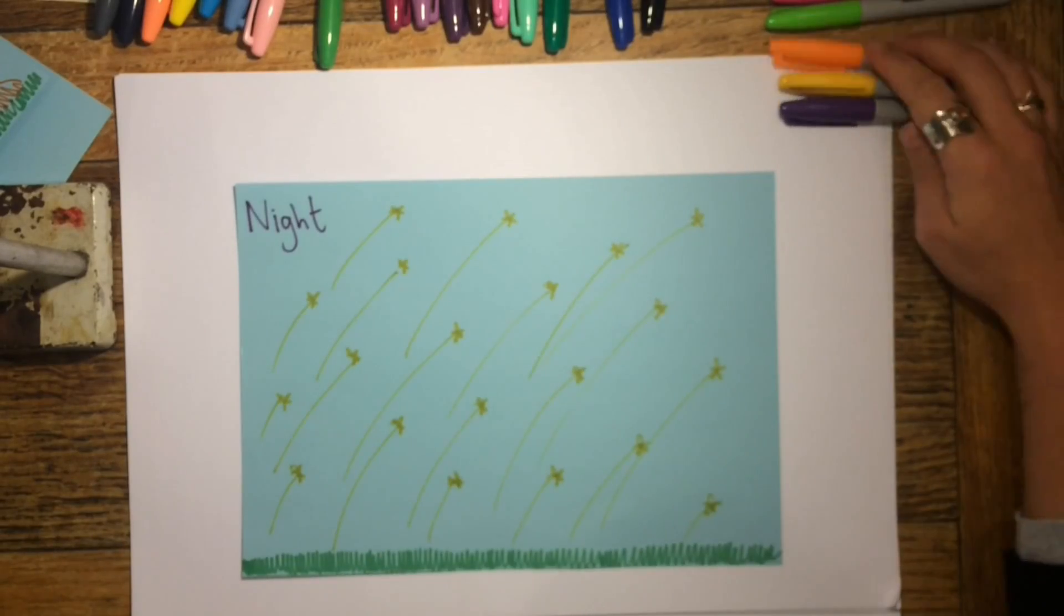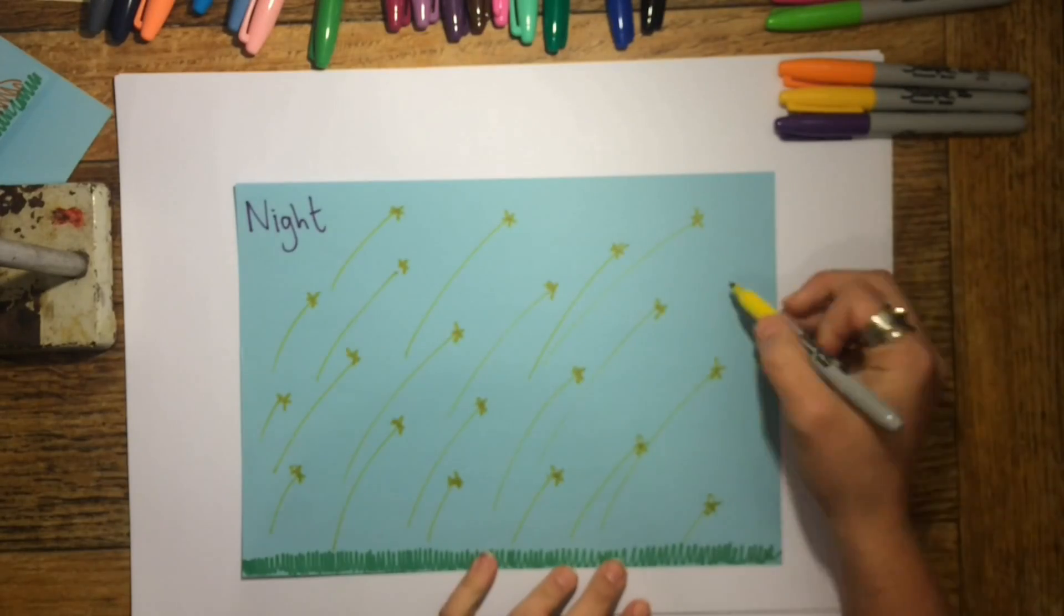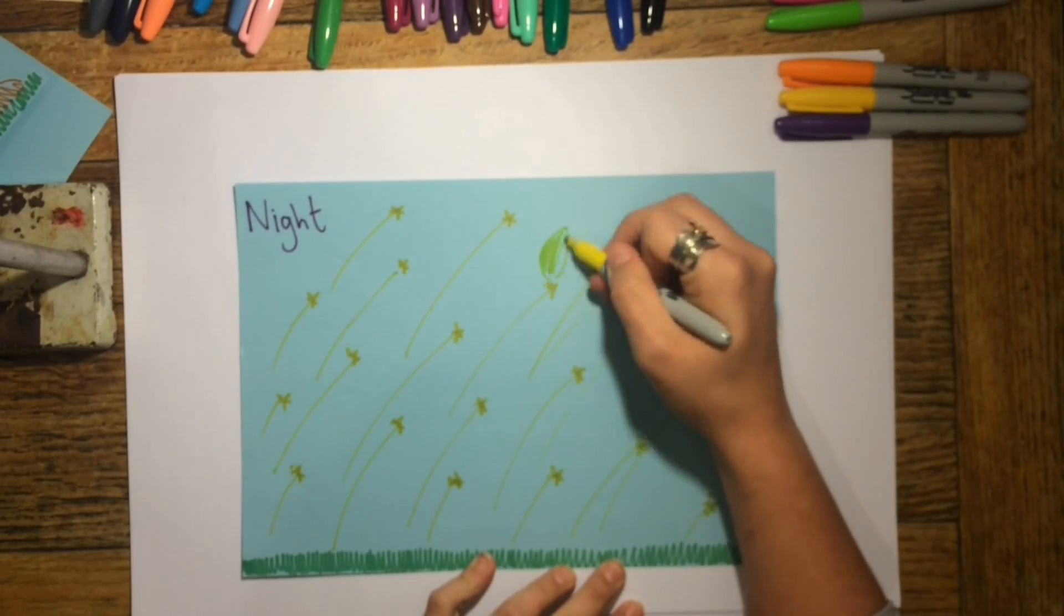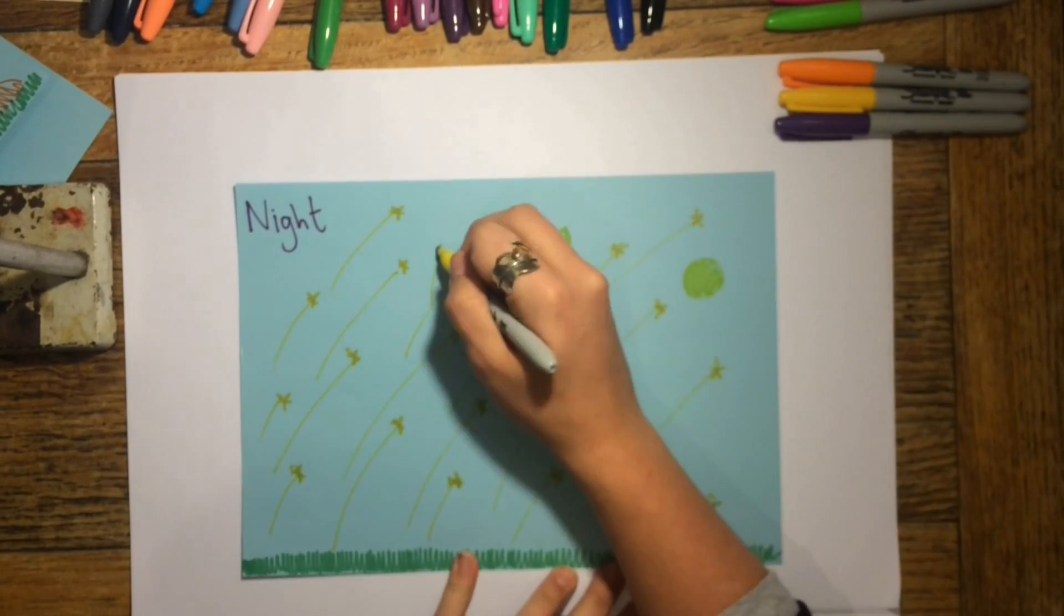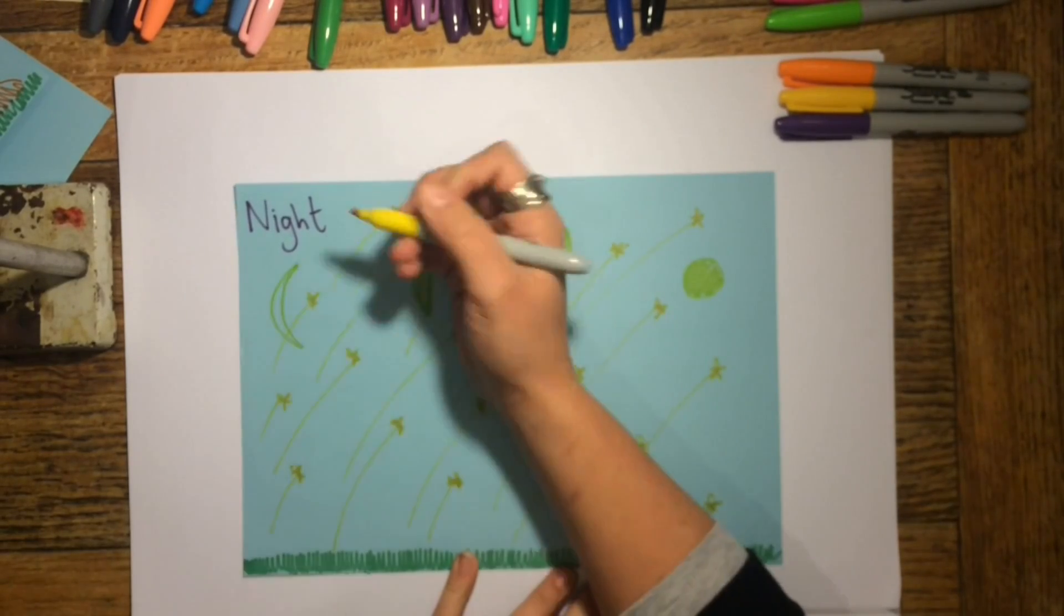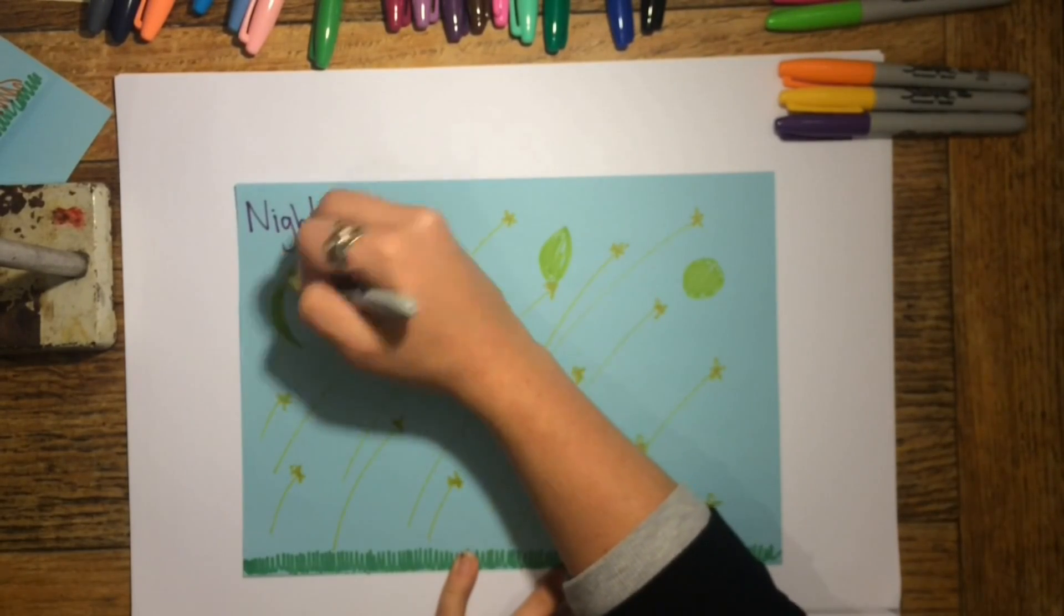One of the other objects that hopefully you're all familiar with in the night sky is the moon, and this also appears to move across our sky from east to west. It changes shape, or appears to change shape, depending on how much of the sun's light is being reflected from the moon towards observing it on earth.